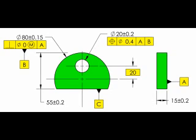Therefore, the hole must be perpendicular to the plane established by datum feature A and 20mm from the axis established by datum feature B.